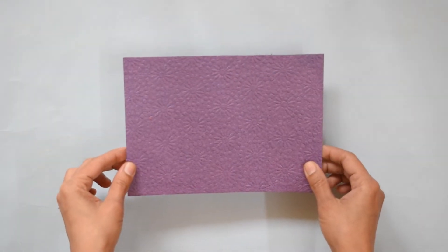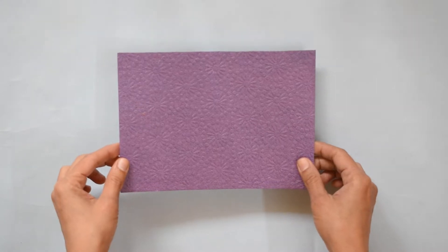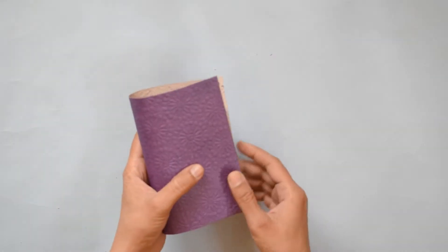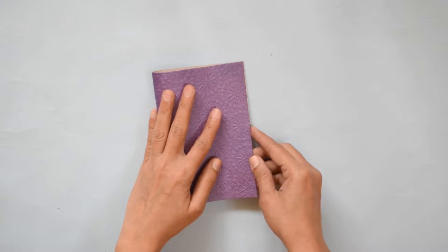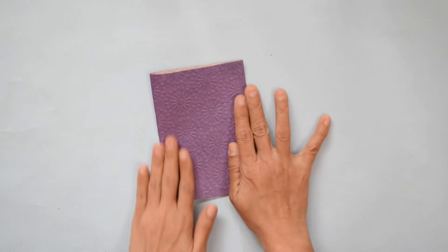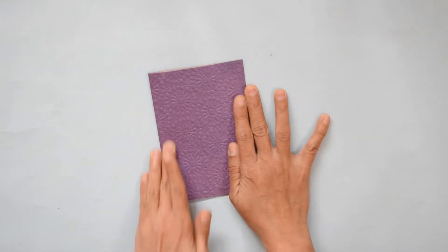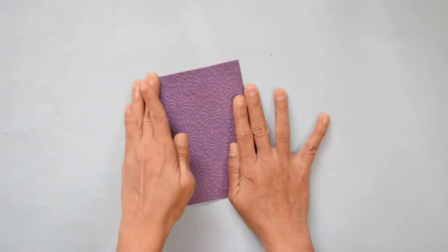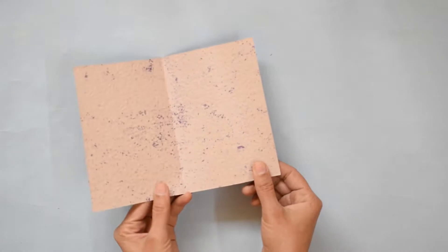Take one design paper, this is rectangle. You fold it from the middle, you can take any size of paper. Here I fold it from the middle and you will get card shape.